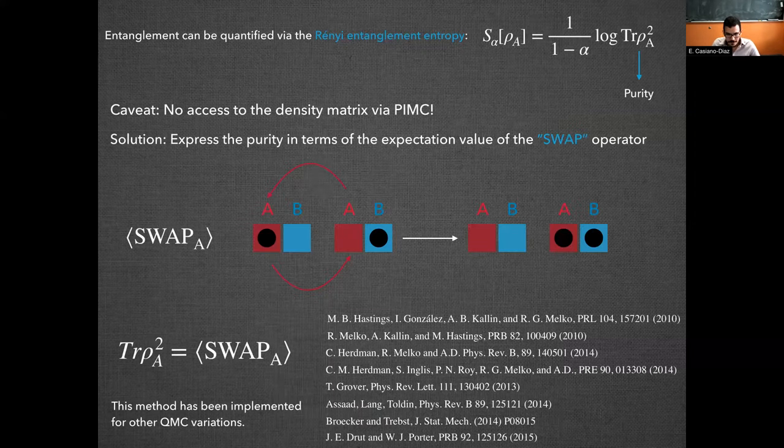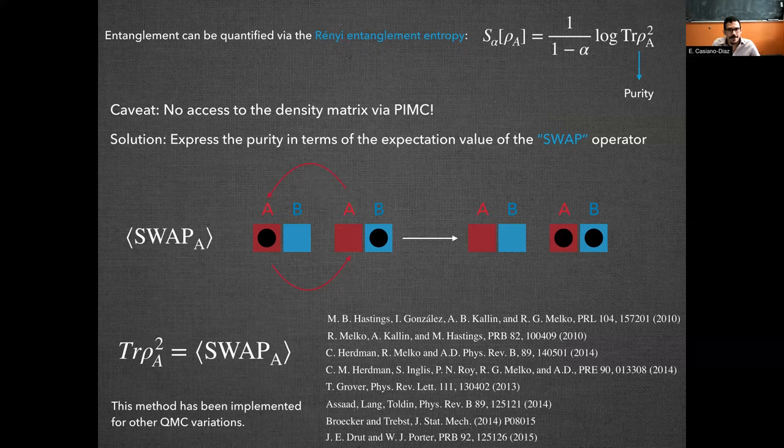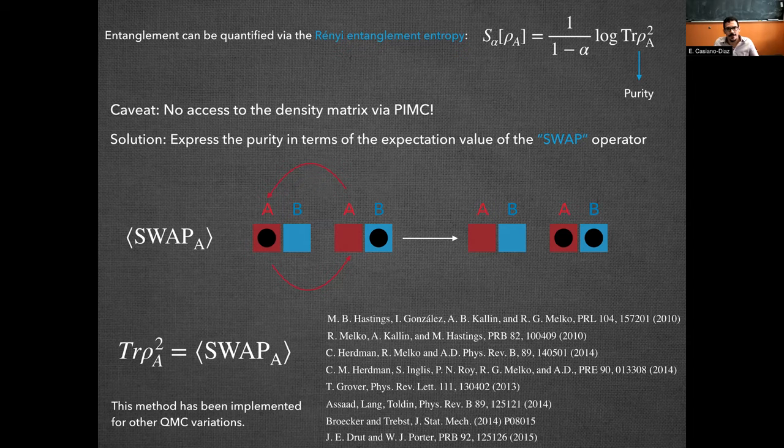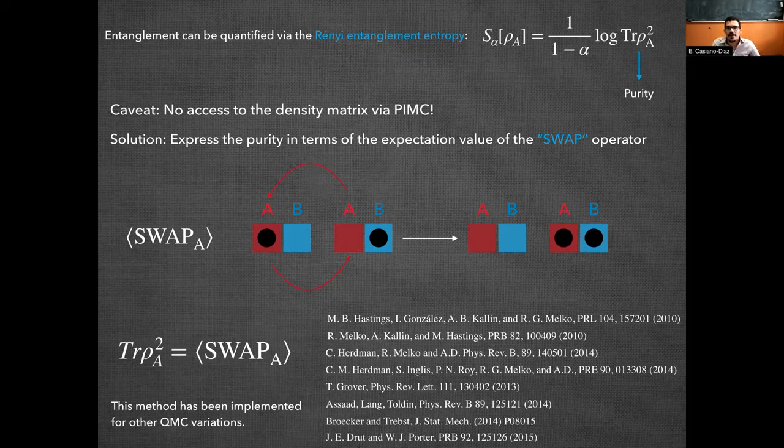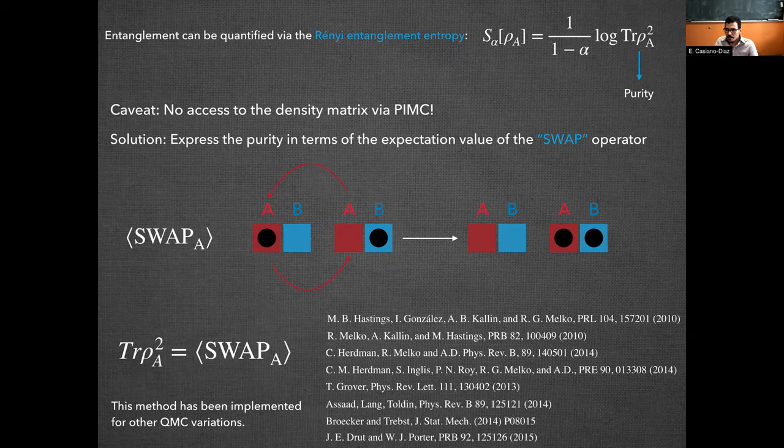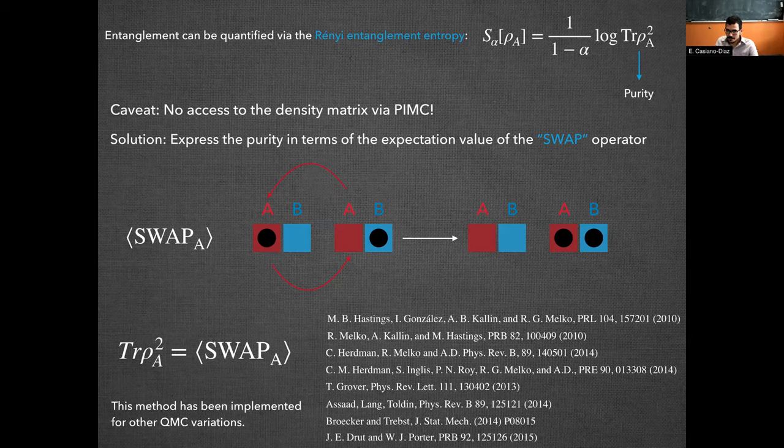Okay, so we have now shown some promising preliminary benchmarking results. But now we would actually like to use our code to calculate the quantum entanglement between spatial bipartitions A and B of our Bose-Hubbard lattice. Here on the top right, we see the expression for the Renyi entanglement entropy, where alpha is just a real number and rho_A is the reduced density matrix of bipartition A. The problem that we have is that via path integral Monte Carlo we cannot access the density matrix.